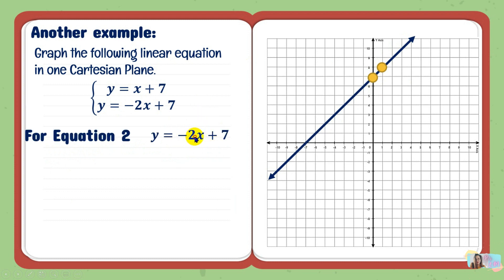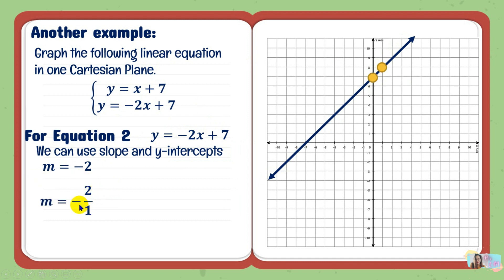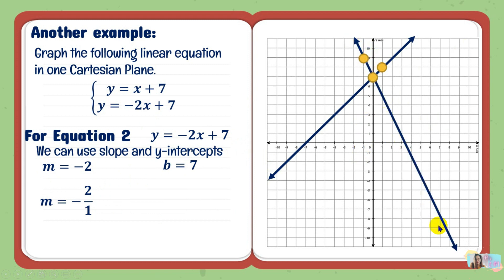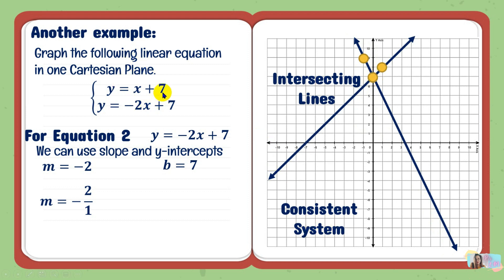For the second equation, the slope is negative 2, which gives negative 2 over 1 — meaning the line goes downward from left to right. The y-intercept is also positive 7. We plot positive 7 on the y-axis as the first point. Then using the slope, 2 units upward and 1 unit to the left, giving a second point at negative 1 and positive 9. We draw the straight line through the two points. Obviously the point of intersection is right there — since the lines intersect, this system is a consistent system. The point of intersection at positive 7 on the y-axis is the solution to this system.